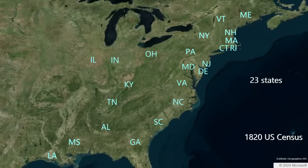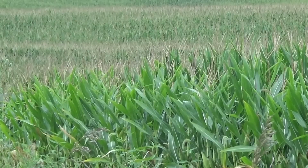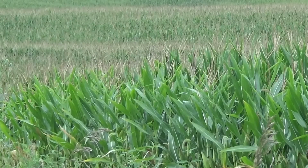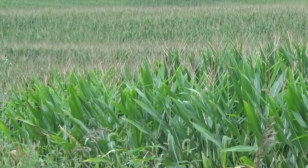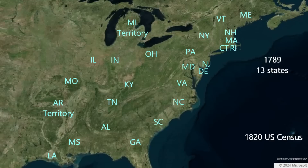In 1820, 23 states had achieved statehood, with Missouri slated to be the 24th state in 1821 due to the recent Missouri Compromise. Missouri was a territory slated for statehood, below which was the Arkansas Territory, and to the far north was the Michigan Territory. Only 30 years after the initiation of the constitutional government in 1789, the United States already had nearly half of its current states formulated.